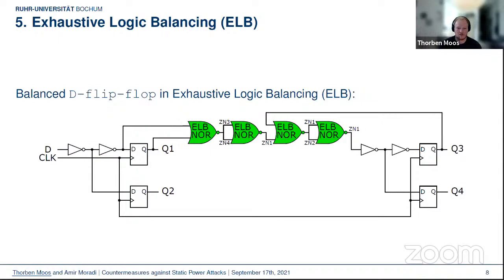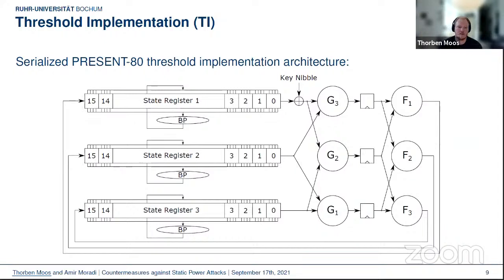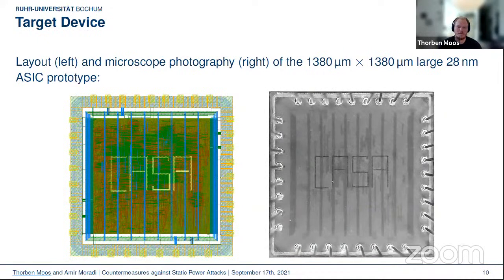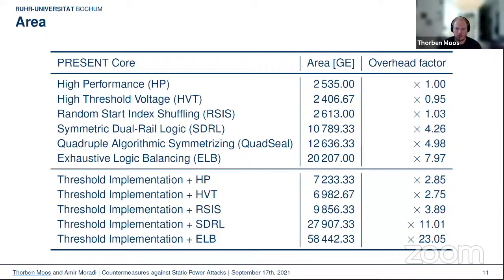In reality this is not exactly true due to intra-die process variations, past imbalances, and aging effects — but it's still a good approximation. For flip-flops it gets more complicated since outputs depend on state, so inputs must be chosen as a function of outputs and implemented with balanced gates — the overhead is quite significant. We mixed all these hiding countermeasures with masking, namely a simple threshold implementation — a three-share TI of PRESENT — and implemented all single and combined countermeasures on a 28nm ASIC prototype we developed: only 1.4mm × 1.4mm.